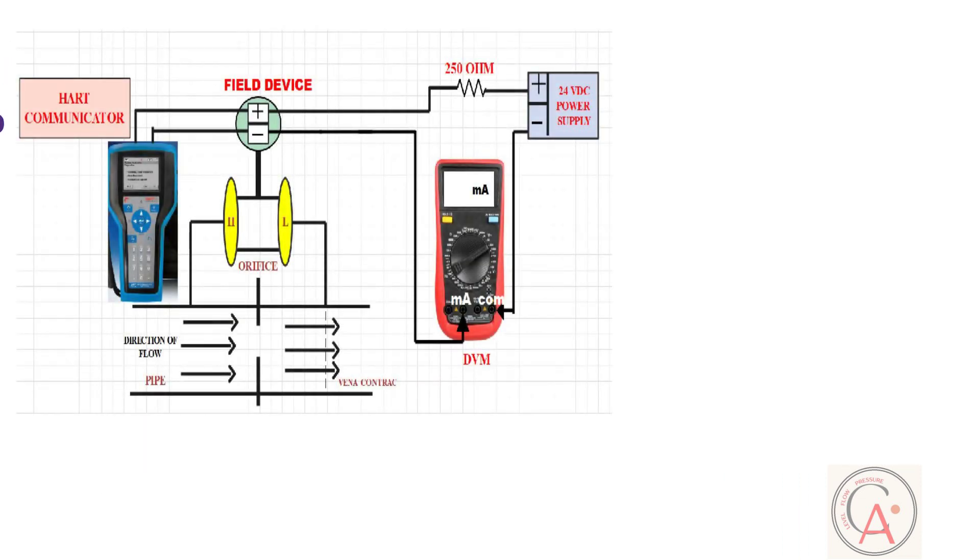As you can see, to perform digital to analog trim, connect ampere meter in series with transmitter, and also connect HART communicator to positive and negative terminals of transmitter. Once connection is done, turn on HART communicator and start HART application.